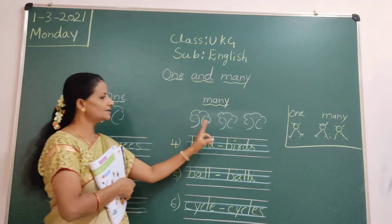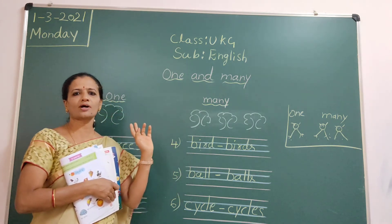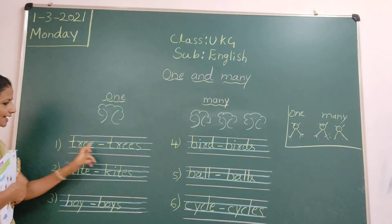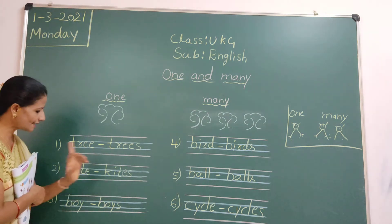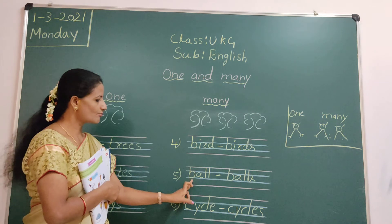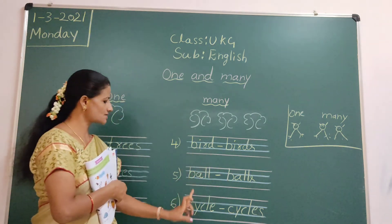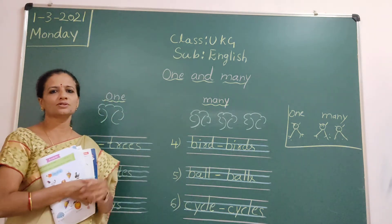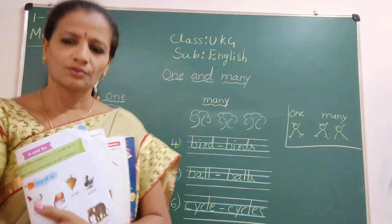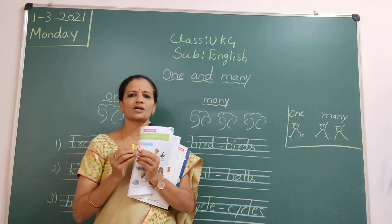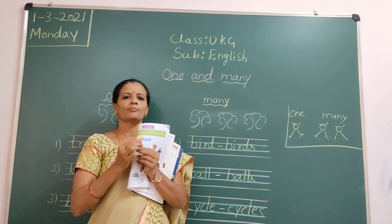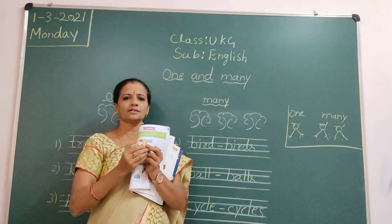Here three trees are there, what we call? Trees — many. So like that: tree, trees; kite, kites; boy, boys; bird, birds; ball, balls; cycle, cycles. So when one chalk piece is there we write 'chalk piece'. Here two chalk pieces are there, what we write? Chalk pieces. One, many. Understood children?